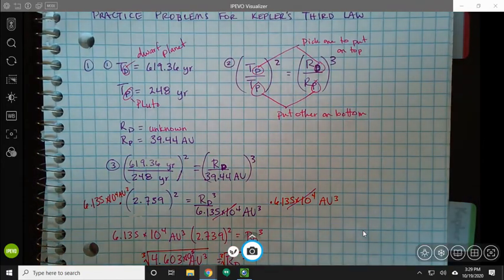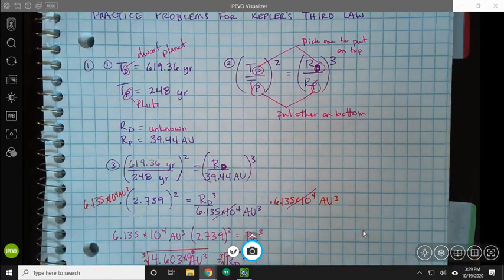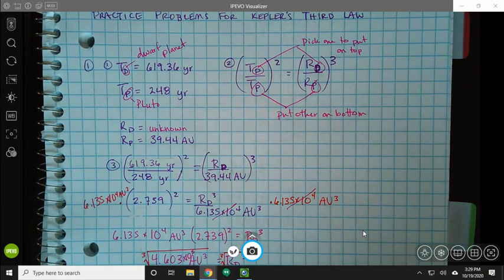All right, awesome and amazing fifth period students. This is going to be a shorter video than the last one because I'm going to work you through how to do today's first problem. So there are three problems that you saw in Google Classroom that you're working on. This is the very first one that has to do with the dwarf planet and Pluto.